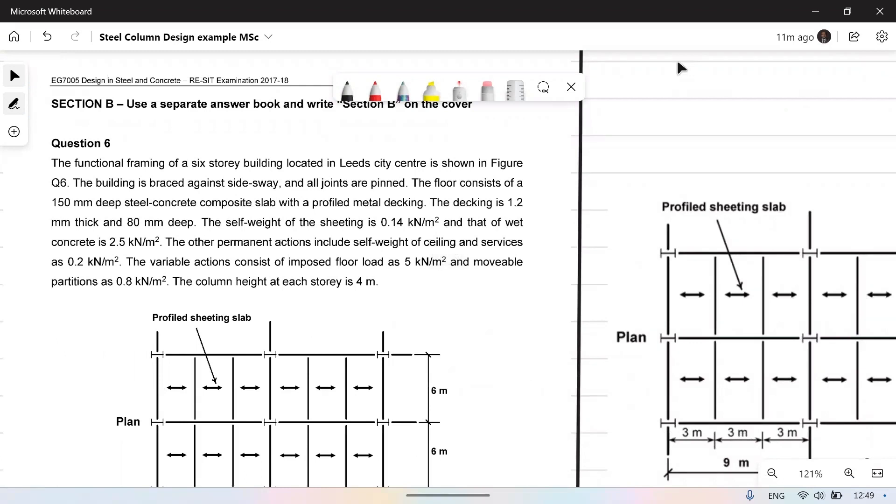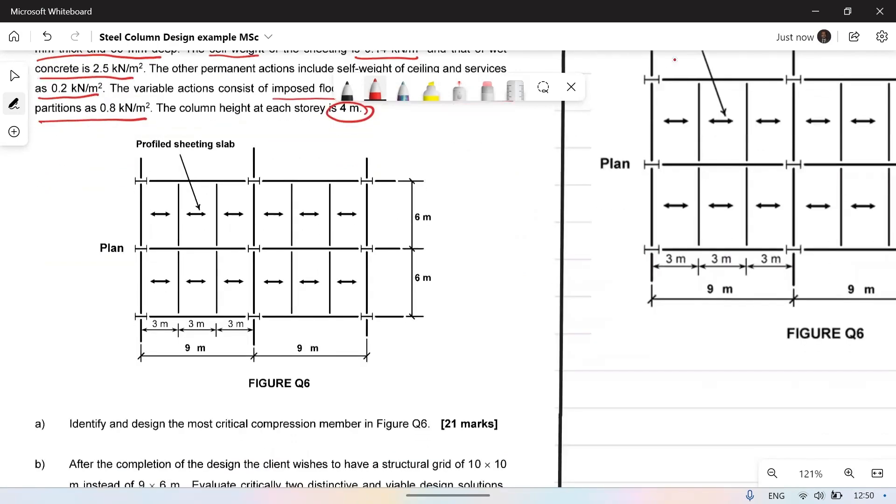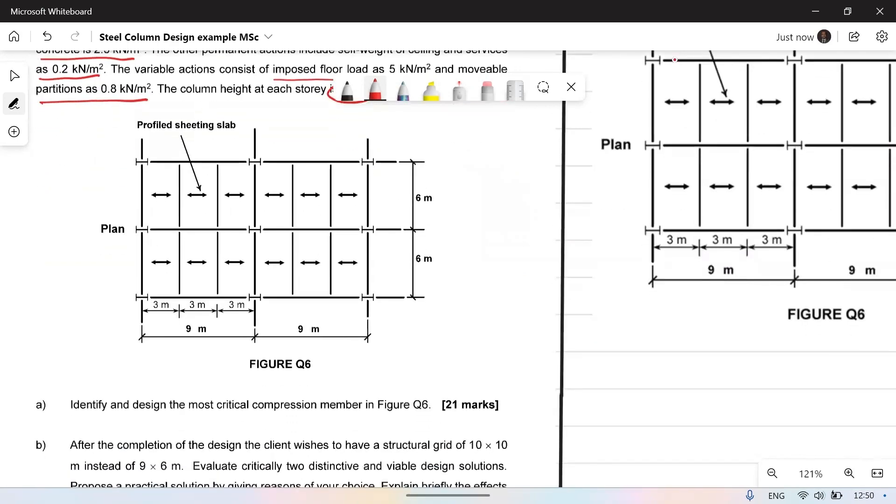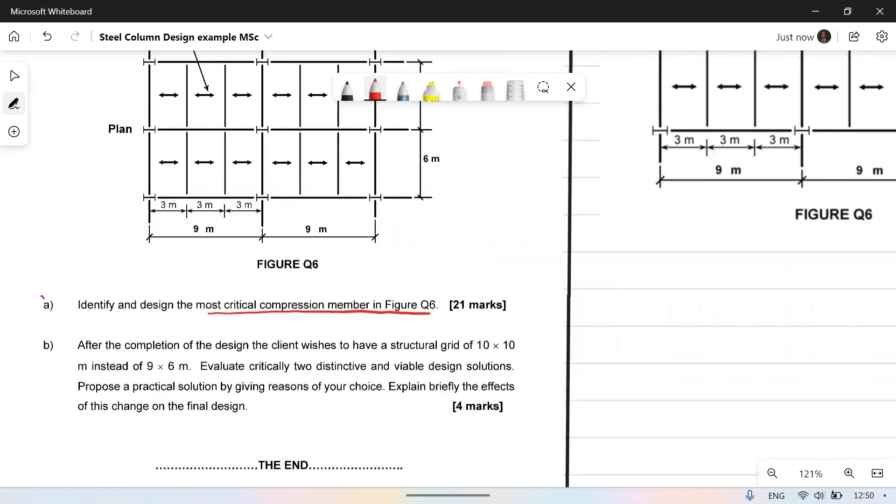In this example a six-story building is located in Leeds city center. The building is braced and all joints are pinned. The floor is a composite floor. The decking is 1.2. It has got self-weight of 0.14 and the concrete weight is 2.5. The imposed floor load is 5 kilonewtons per meter square and partitions is 0.8. We have to identify the critical member in this example and after the completion of the design the client wishes to have a 10 by 10 grid instead of 9 by 6 and we have to evaluate two design options and decide a practical solution.